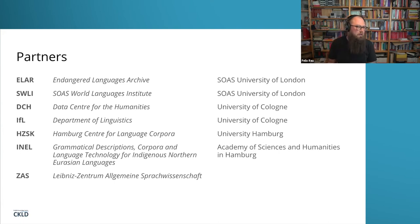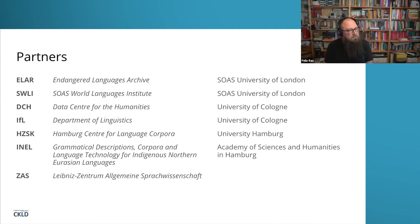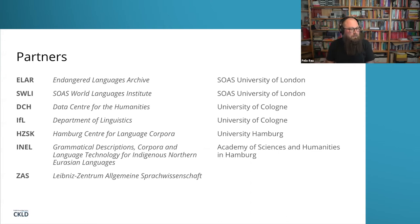Because of the general competence profiles of our member institutions, we also have expertise in multilingualism. The actual partners of the competence center are: the Endangered Language Archive (ELAR) in London, the SOAS World Languages Institute — also from SOAS — and the Data Center for the Humanities at the University of Cologne, which is my home institution. That is a research data management center, with a focus on audiovisual data, one of our key areas of expertise.